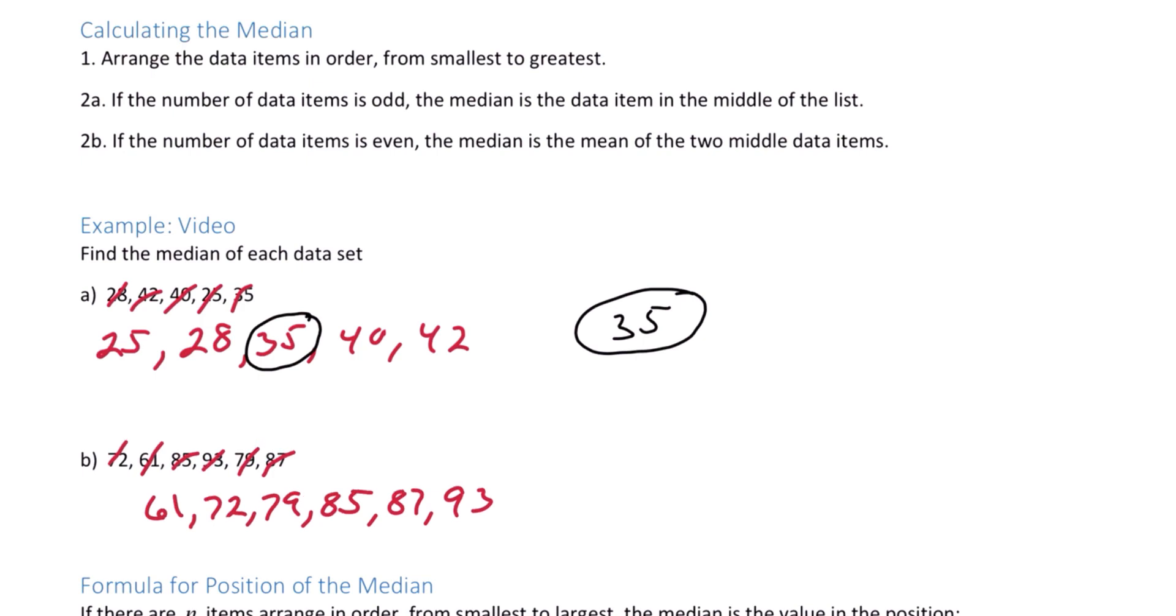Notice this time we have an even number of data items in the set. There's six items, so the middle of the set is between two numbers. We want to find the mean or the average of those two middle numbers: 79 plus 85 divided by 2.